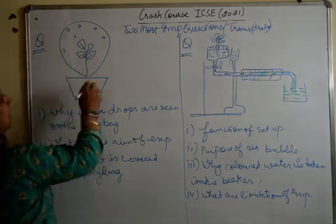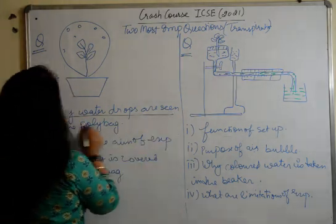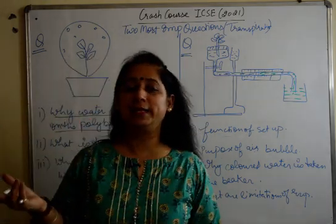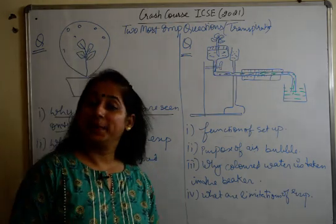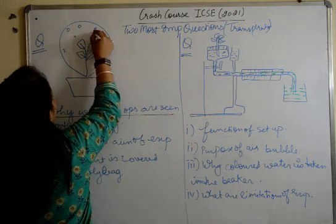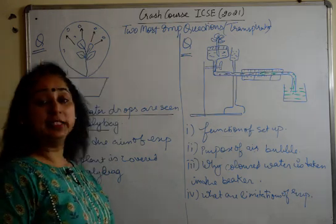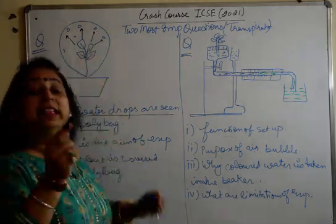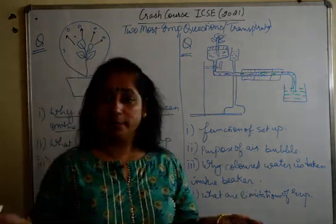One question involves a setup where you are asked multiple questions. For example, why are water drops seen on the polybag or polythene? Children tend to write 'because of transpiration,' which is a wrong answer. The correct answer is that plants transpire water in the form of water vapors, and when these vapors touch the cold surface of the polythene, condensation takes place and water droplets are seen on the polythene bag.